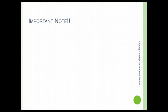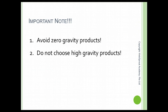Let's do a quick recap. First, avoid zero gravity products. Second, do not choose high gravity products. The ideal gravity range to look at is from 1 to 60. Sometimes I also choose products with 0.5 gravity and onwards — as long as it's not zero, I'm prepared to explore. These are the important notes you need to take care of.